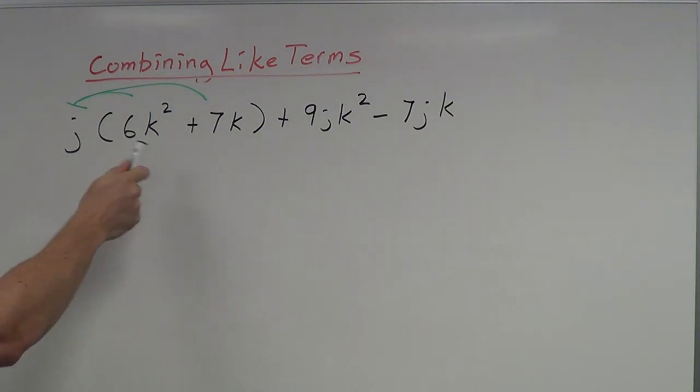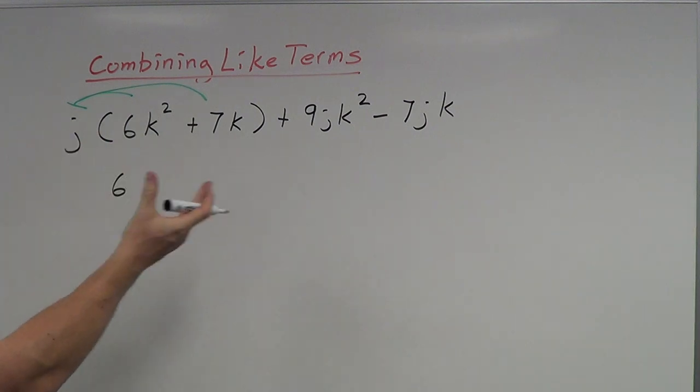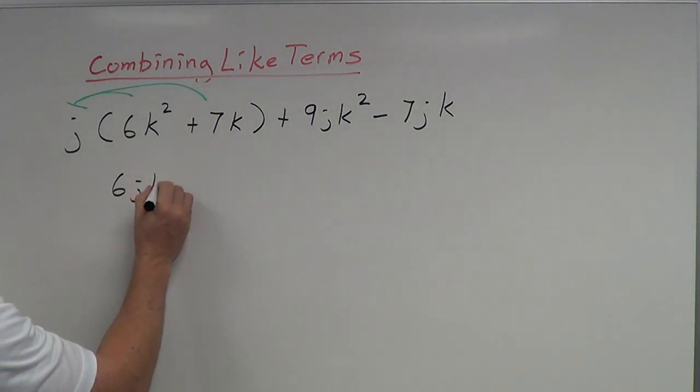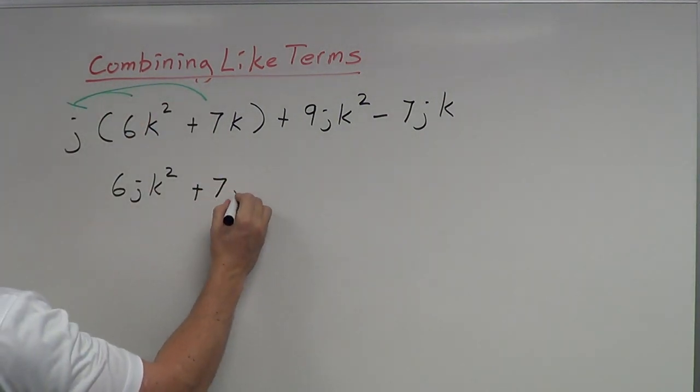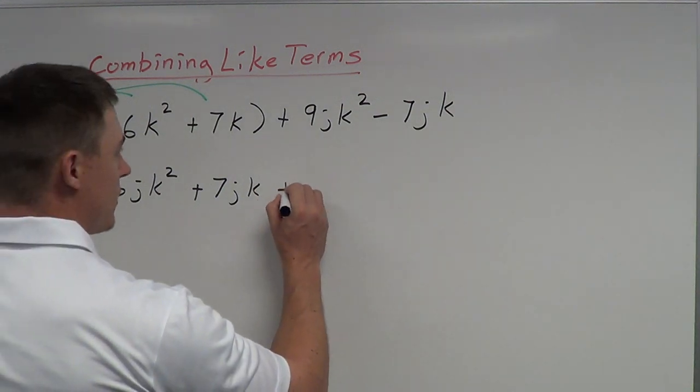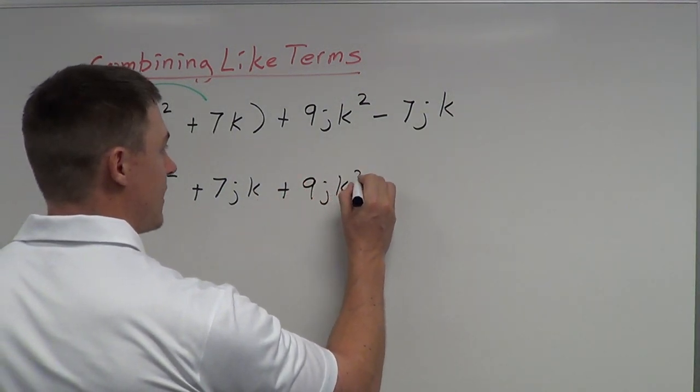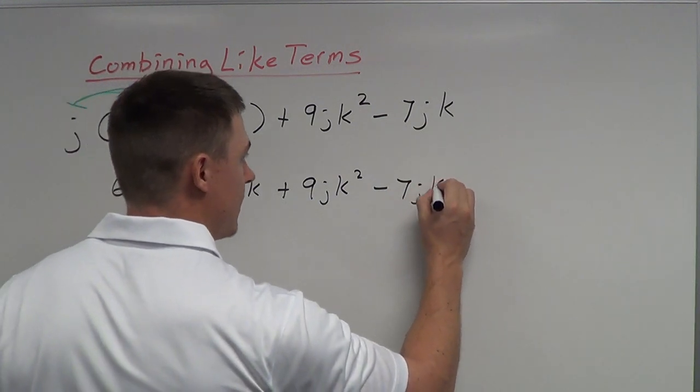And then when we write these j's and k's together, we always try to write them in alphabetical order. j comes before k. So this is going to be 6jk². That's the first distribution. The second distribution is going to be 7jk. The numbers don't change. It's just the variable parts of them change. Now I'm going to write the rest: plus 9jk² - 7jk.